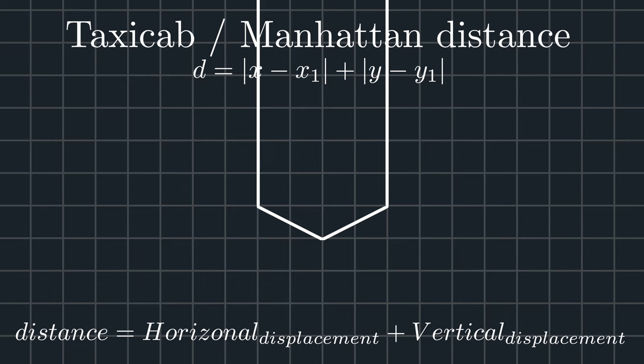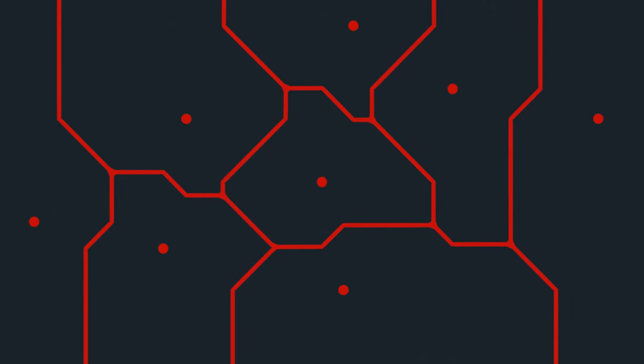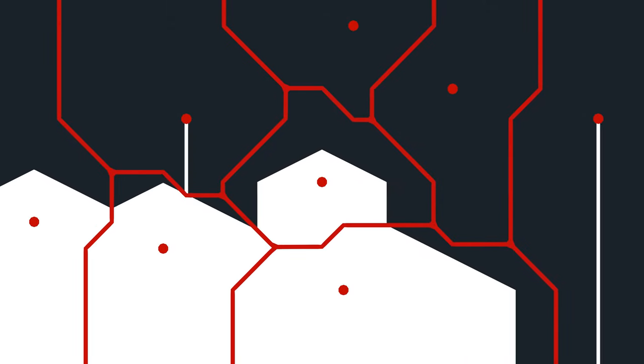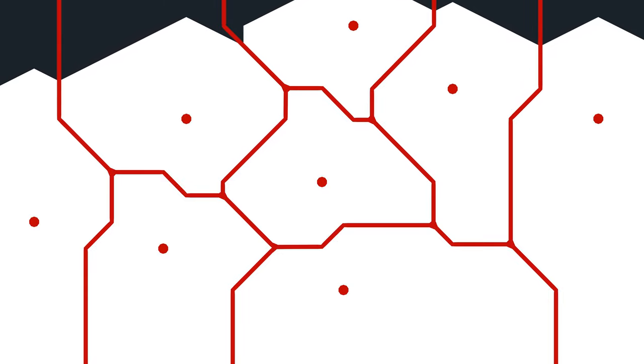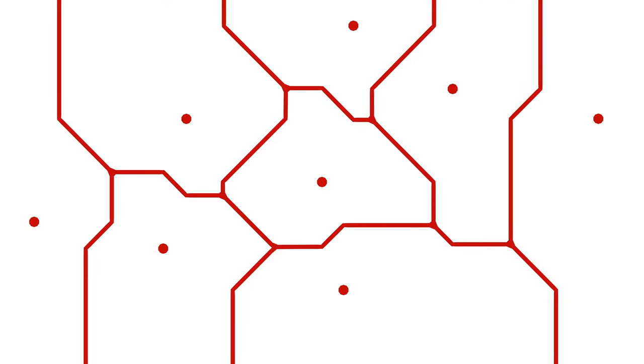So how about trying to make a Voronoi diagram with these taxi cab parabolas? We can use Fortune's algorithm to create the boundary lines of a taxi cab Voronoi diagram. This is what it would look like compared to a Euclidean Voronoi diagram.